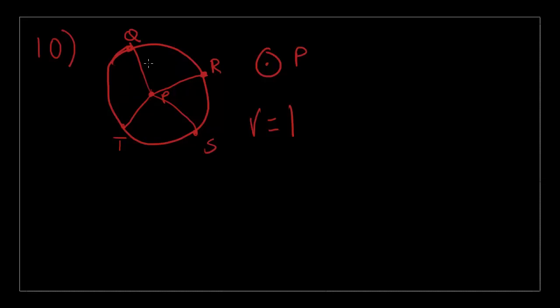So we know that PQ equals 1, PR equals 1, PS equals 1, and PT equals 1. Therefore, the value of all of these added together is 4, which is the correct answer.